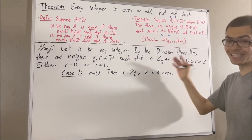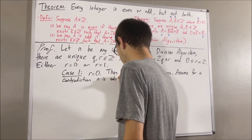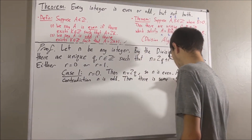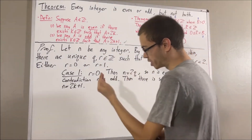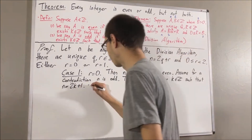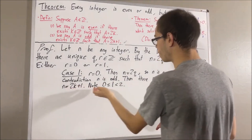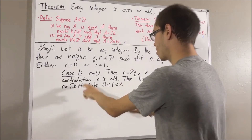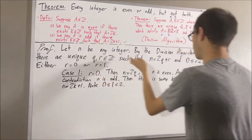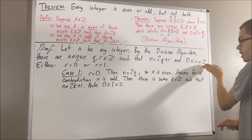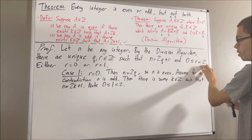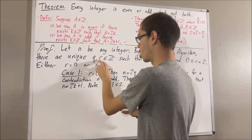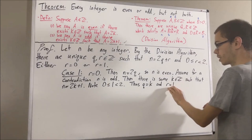We'll assume for a contradiction that n is odd. Then by our definition, there is some integer k such that n is equal to 2k plus 1. Note that 0 is less than or equal to 1 is less than 2. These two facts tell us that q must equal k and r must equal 1, because q and r are unique integers satisfying those two statements — and k and 1 make them true. So q must equal k and r must equal 1. But this contradicts the fact that r is equal to 0.